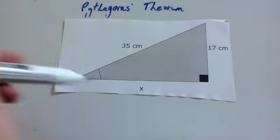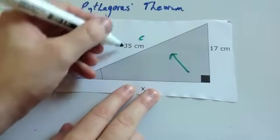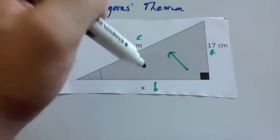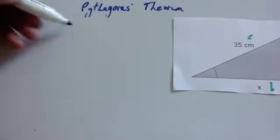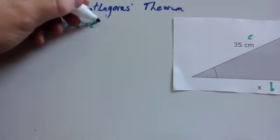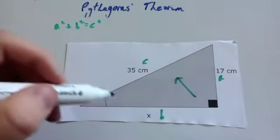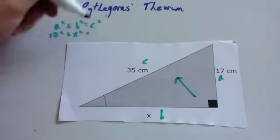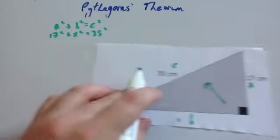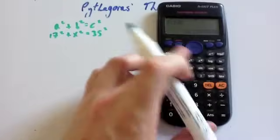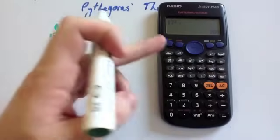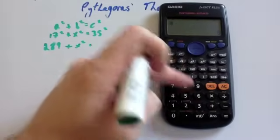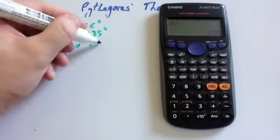Okay, one last example. We've got a right-angled triangle. Again, they've given us the longest side — the hypotenuse c is 35. The smaller side is 17, so that's a, and b is the other short side x — so we're trying to find a short side. Using Pythagoras' theorem: a squared plus b squared equals c squared. a is 17, b is x, and c is 35. So you get 17 squared plus x squared equals 35 squared. 17 squared equals 289, and 35 squared equals 1,225.